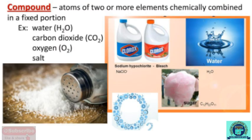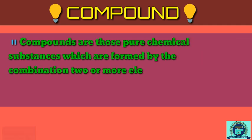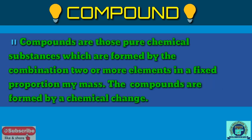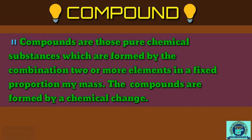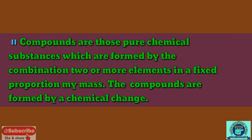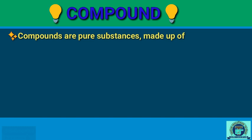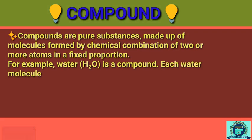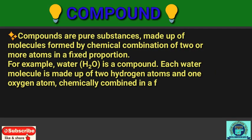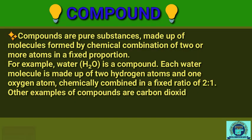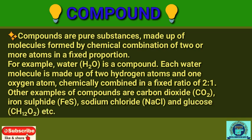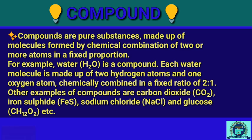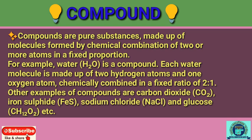Now let's understand compounds. Compounds are those pure chemical substances which are formed by the combination of two or more elements in a fixed proportion by mass. Compounds are formed by chemical change. For example, water H₂O is a compound — each water molecule is made up of two hydrogen atoms and one oxygen atom, chemically combined in a fixed ratio of 2:1. Other examples are carbon dioxide CO₂, sodium chloride NaCl, and glucose C₆H₁₂O₆.